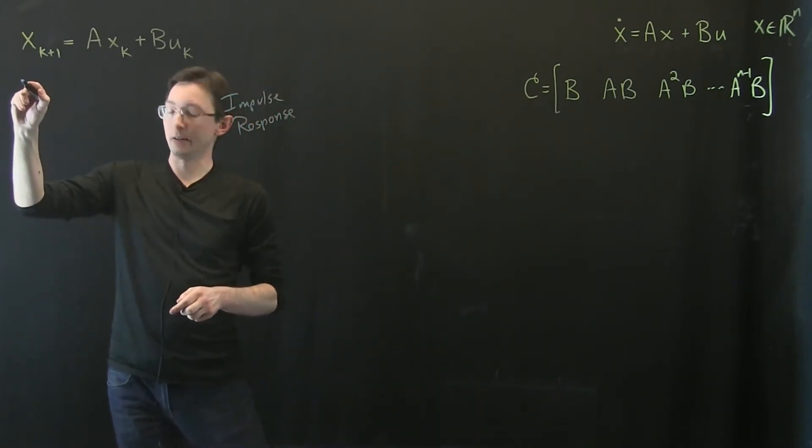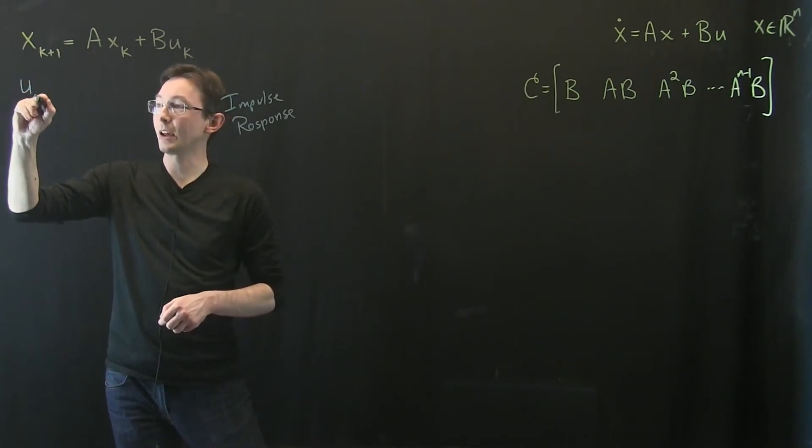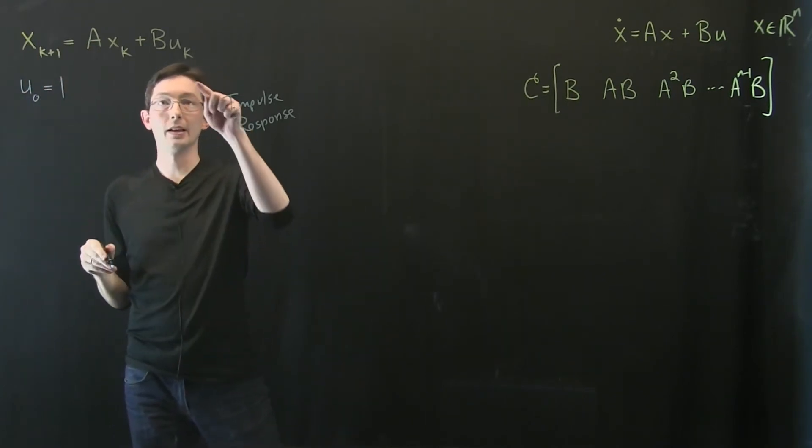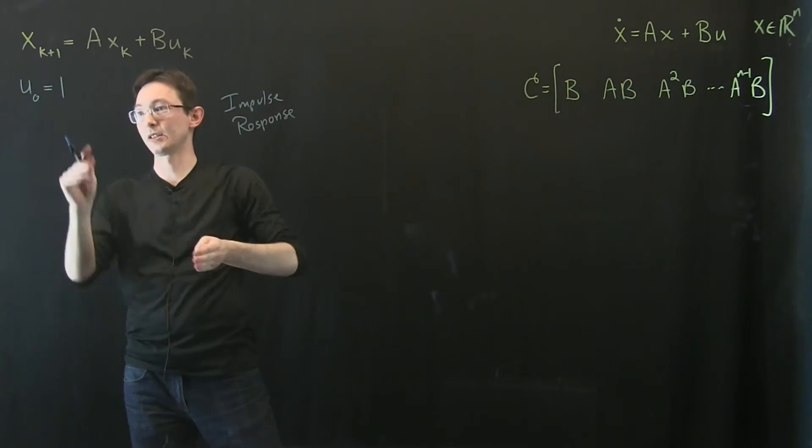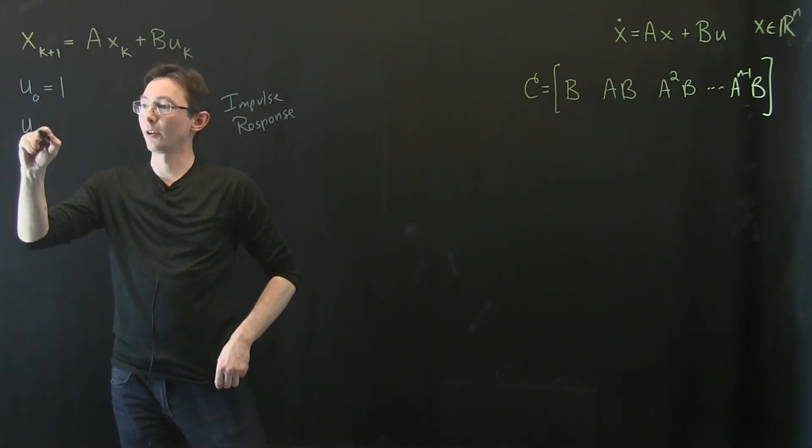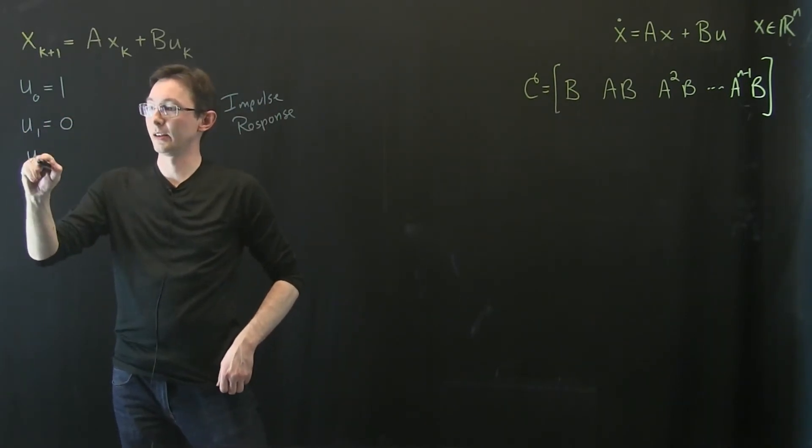Okay so we're going to have u at time 0 equals 1. So we're going to impulse u at time 0. And then for all later times we're just going to let it equal 0.